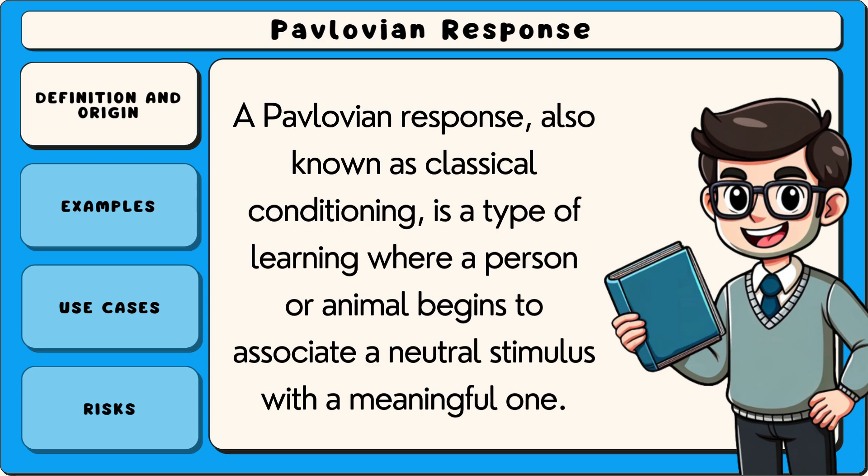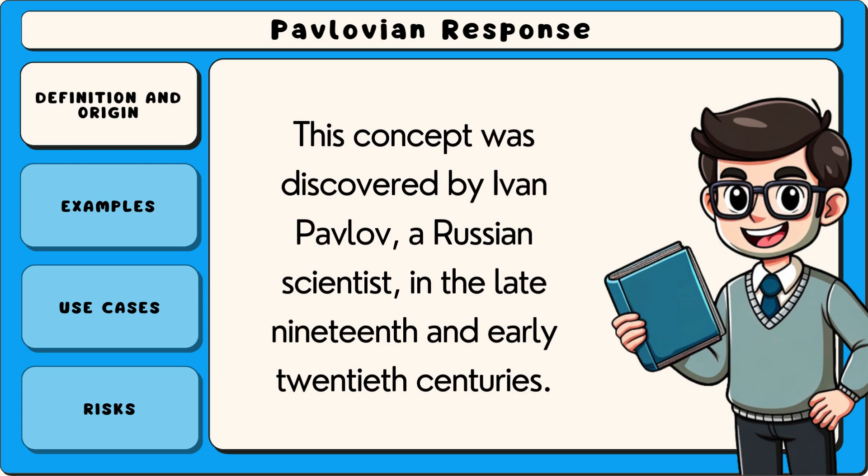A Pavlovian response, also known as classical conditioning, is a type of learning where a person or animal begins to associate a neutral stimulus with a meaningful one. This concept was discovered by Ivan Pavlov, a Russian scientist, in the late 19th and early 20th centuries.